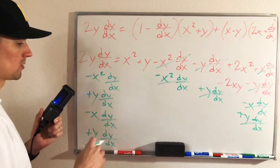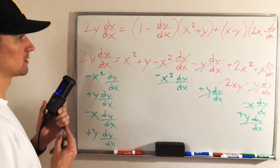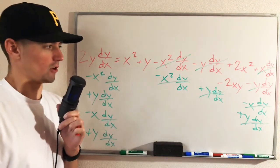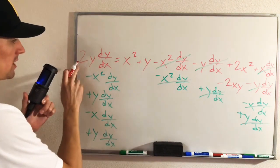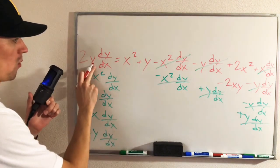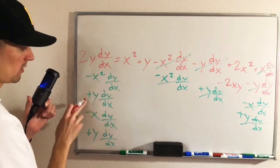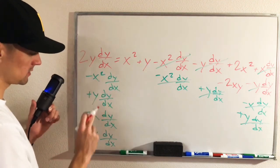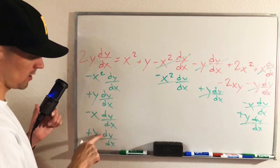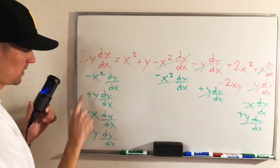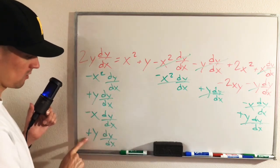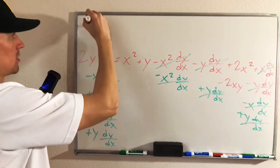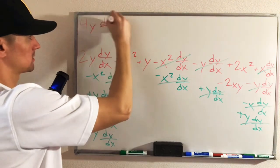So let's get organized and look at all of our like terms on each side of our equation. Over here on the left, we have 2y dy/dx, plus another y dy/dx, and then plus another y dy/dx. So we have 2 of them here, 1 of them here, and 1 of them here — giving us actually 4y dy/dx when combining like terms.